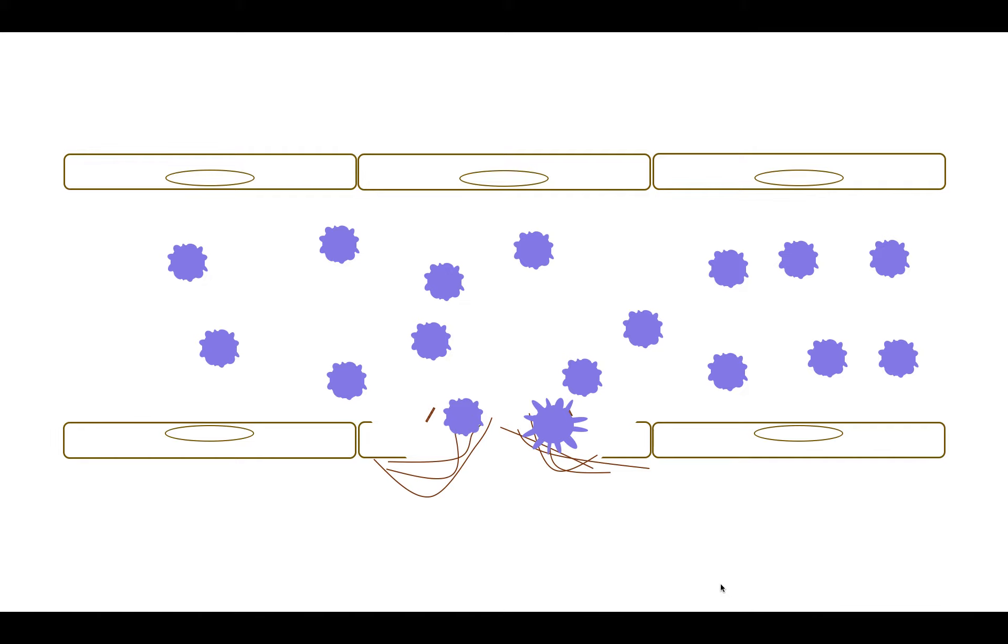As more platelets bind to the injury site, they also undergo activation. And as they stick to the injury site in the process of adhesion, they also have the effects of collagen, which causes the release of platelet alpha and delta granules in the process of secretion.